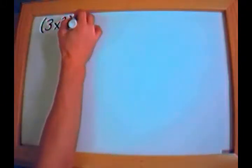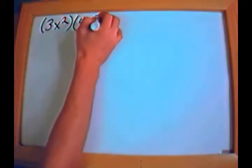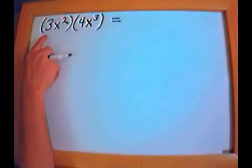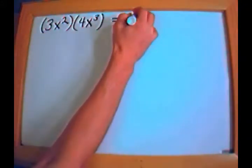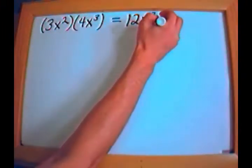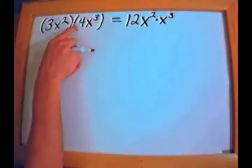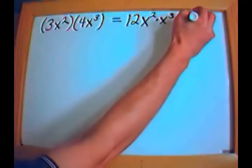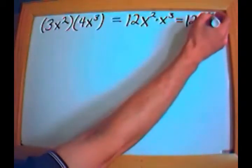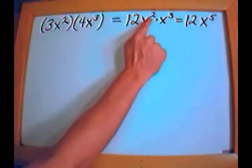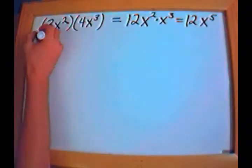Let's multiply 3x squared times 4x cubed. The first thing I can do is multiply the numbers together: 3 times 4 is 12. What's left over is x squared times x to the third. We can rewrite this as 12 times x to the fifth, because when you multiply two exponents with the same base, you simply add the exponents. So that's fairly easy.